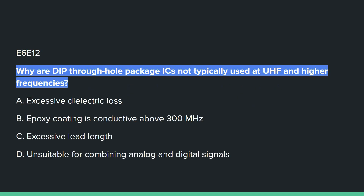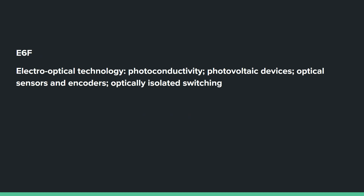E6E12: Why are DIP through-hole package ICs not typically used at UHF and higher frequencies? C, due to excessive lead length. E6F covers electro-optical technology, photoconductivity, photovoltaic devices, optical sensors and encoders, and optically isolated switching.